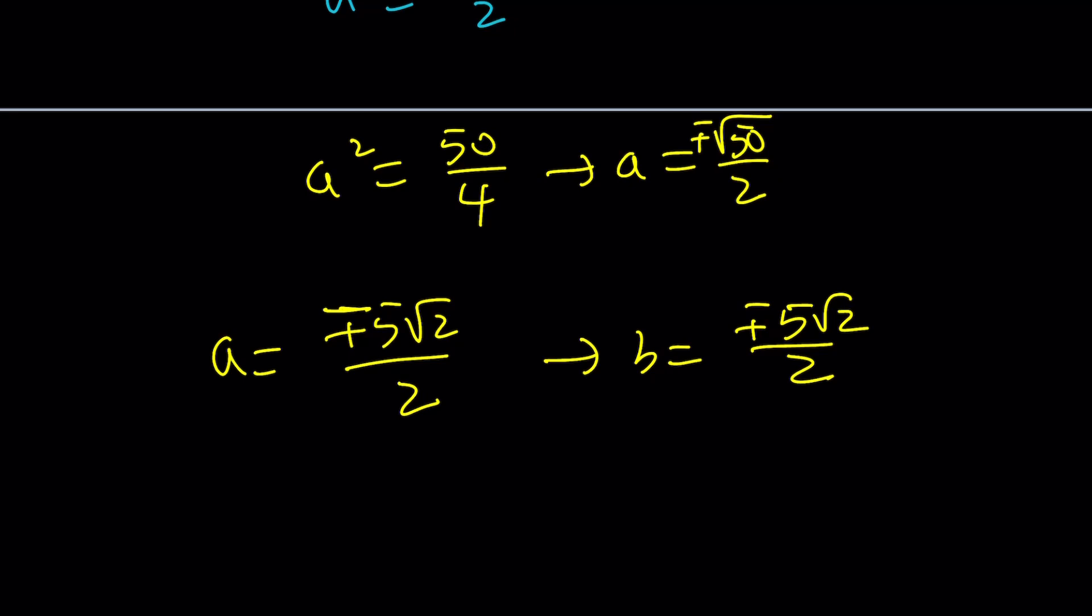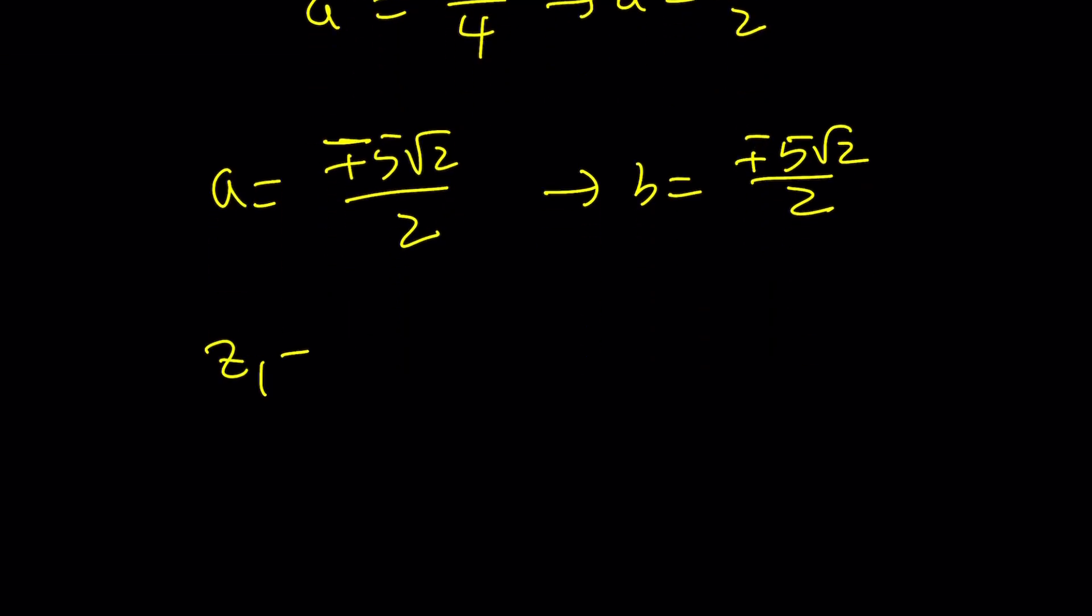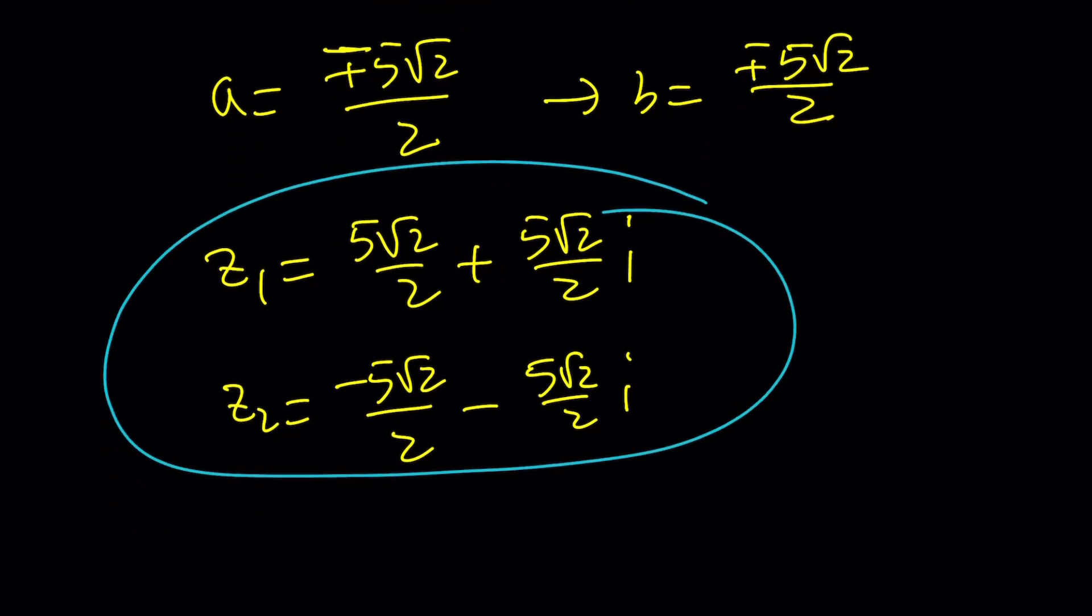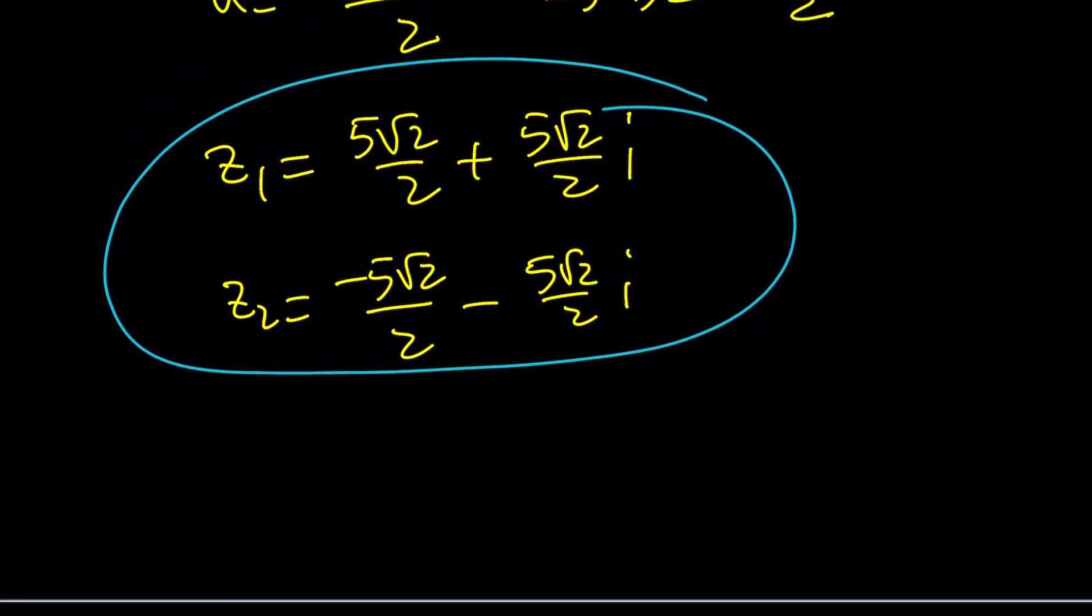This means that the value of b basically depends on a. So one of the solutions to this equation is going to be 5 root 2 over 2 plus 5 root 2 over 2i. And for the other solution, we're basically going to just use the negative value, negative 5 root 2 over 2 minus 5 root 2 over 2i. So are those the only solutions that satisfy the system? Well, those are going to be the only solutions. There's no real solutions to these equations. Z is complex. So we found the most complex cases.